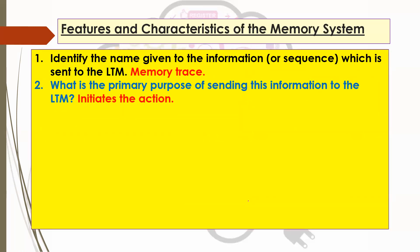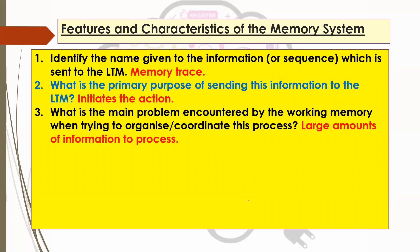The main problem encountered by the working memory when trying to organise and coordinate this whole process is that it's got such a huge amount of information to deal with. It has to happen fairly quickly, but it's difficult to process that level of information with great accuracy because there's potentially so much information of different types — it's got to send it to different subsystems, each subsystem does its part, it goes back to the central executive and onto the episodic buffer to be coordinated before being organised into the trace. That's a lot to do.